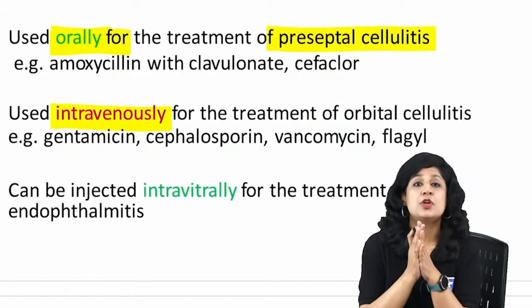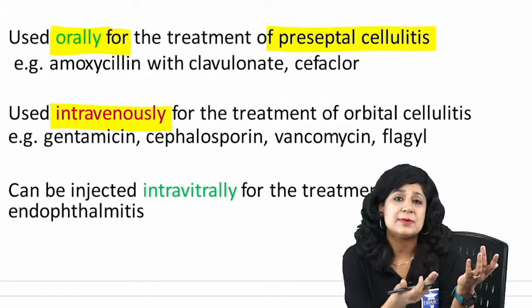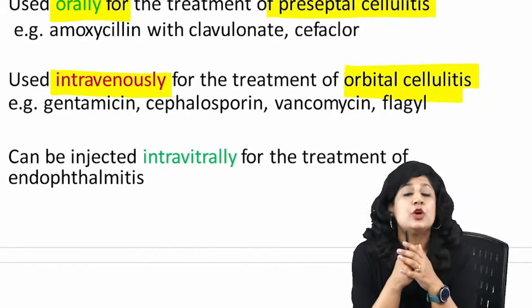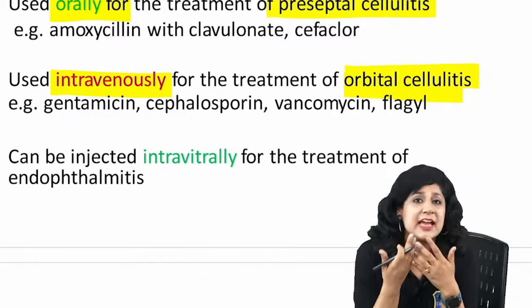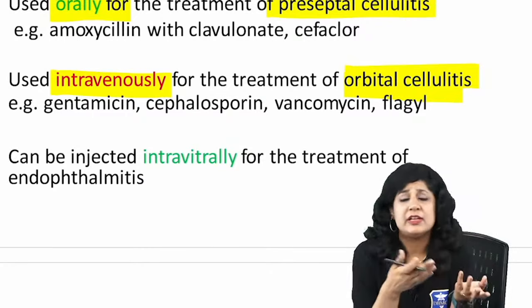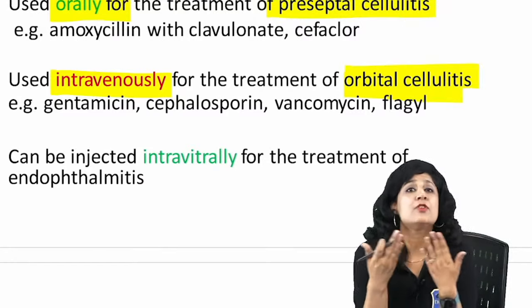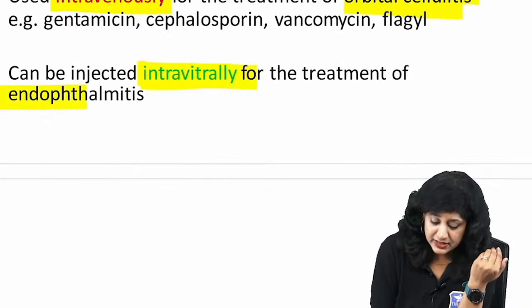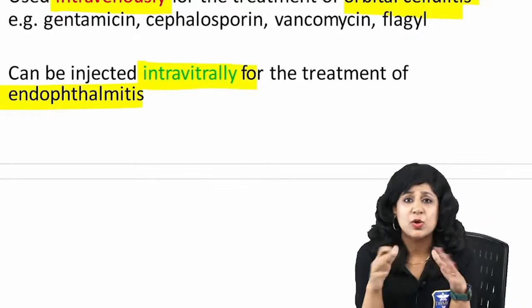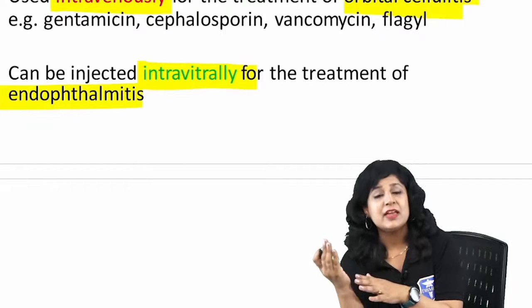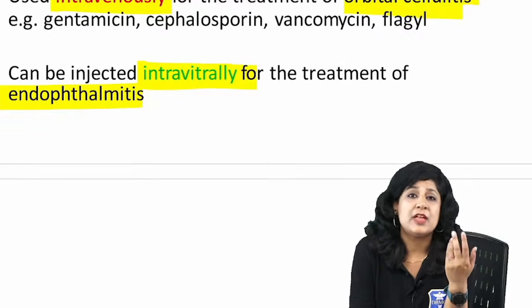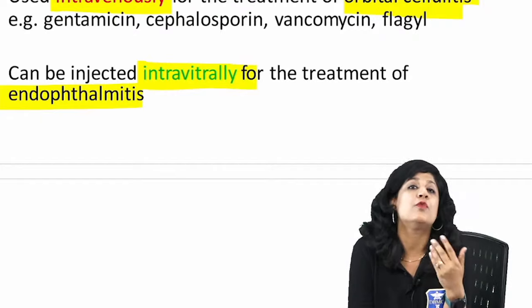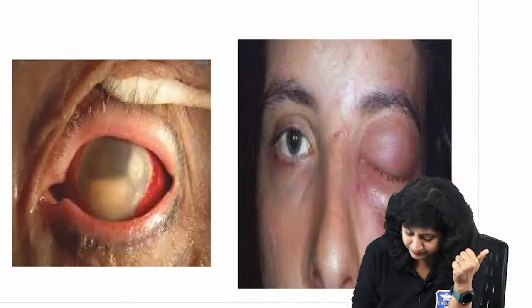Intravitreal antibiotics are given in endophthalmitis, where antibiotics are started by all routes — oral, topical, systemic, intravenous, and most importantly intravitreal. After intravitreal injection, the patient is observed for 48–72 hours; if there is no improvement, vitrectomy is performed. In clinical scenario questions involving orbital cellulitis or endophthalmitis, the answer almost always involves antibiotics.